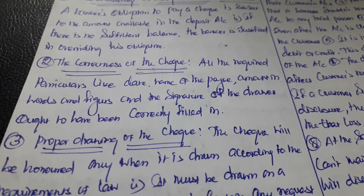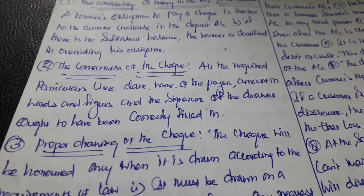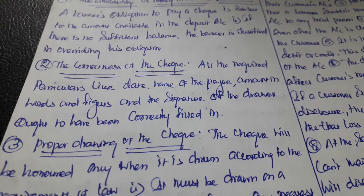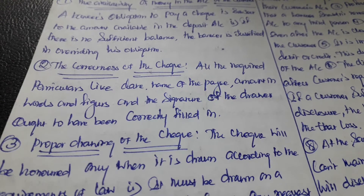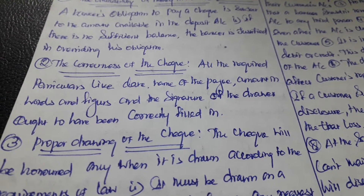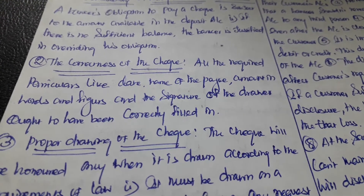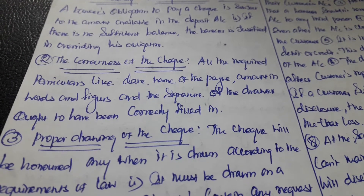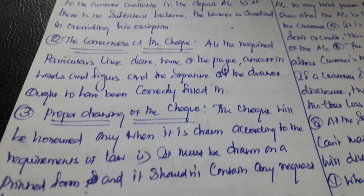The second duty of a banker is to check the date of the check and verify the correct maturity date. The name of the payee must be present, the amount in words and figures should match, and the signature of the drawer should match the specimen signature. Only if all these are in correct form will the banker honor the check.